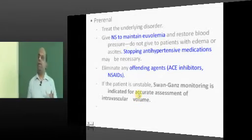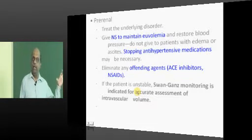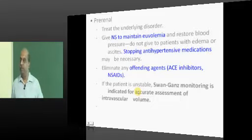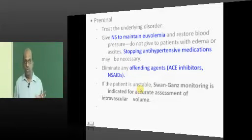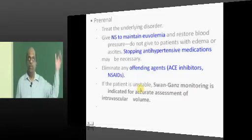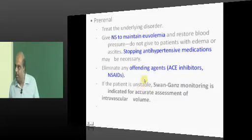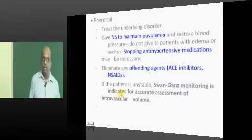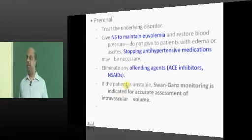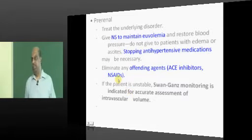What will a Swan-Ganz catheter do? It will calculate pulmonary capillary wedge pressure, which is the pressure of the left atrium. That is an important indication. So while the fluid is being administered, if the patient goes into pulmonary edema — that is increased pulmonary capillary pressure — it can be monitored by placing a Swan-Ganz catheter.